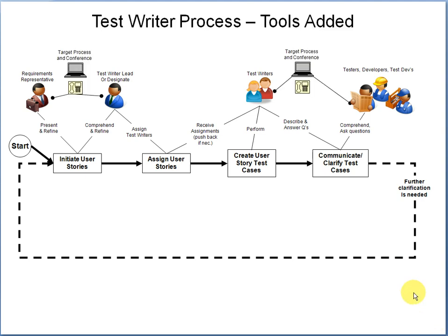The next layer shows pretty much the same thing except now we have some tools added. We see here there's a software package called Target Process as well as telephone conferencing. Maybe this is a distributed team not working in a co-located situation, so they're teleconferencing and discussing things over the phone while looking at Target Process. The line can be drawn from the tool either to the role, or better yet, tied right to the line representing the responsibility, showing what actors are using to accomplish their responsibilities in the given activities.